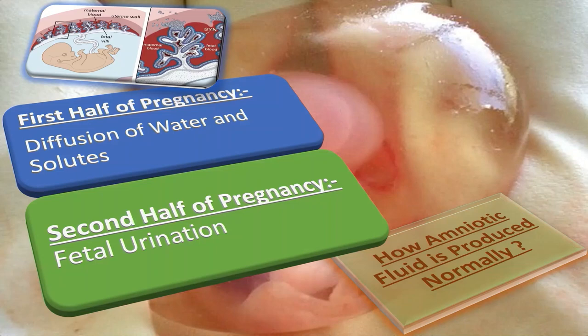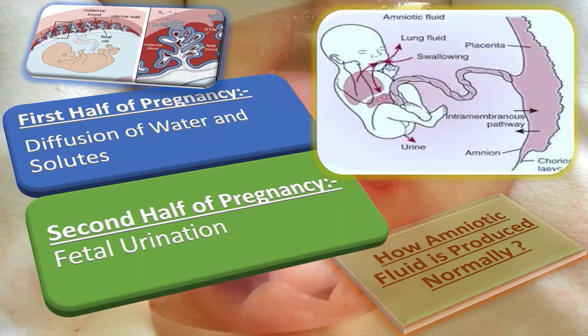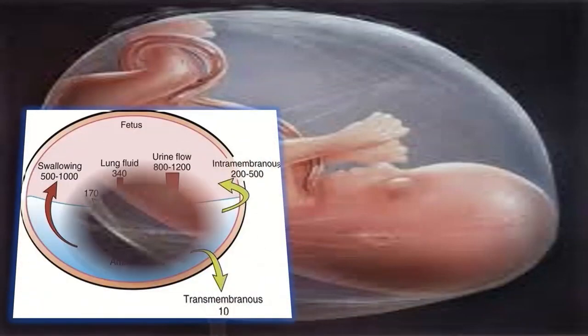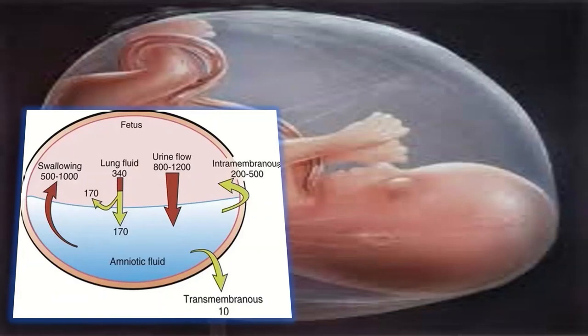In the second trimester, the fetal skin becomes keratinized, making it impermeable to further diffusion. At this time, the fetus contributes to amniotic fluid volume almost exclusively through fetal urination. Urine has been observed in the fetal bladder as early as 11 weeks trans-abdominally and 9 weeks trans-vaginally. Input into amniotic fluid is from fetal urine and lung fluid; output includes fetal swallowing and intramembranous flow to the placenta and fetus.